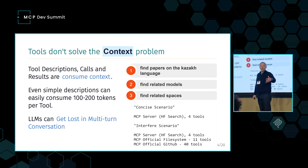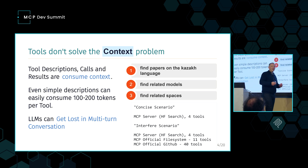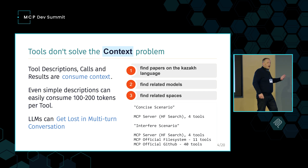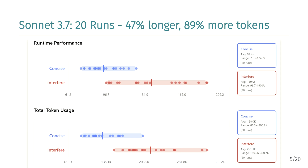One scenario used the search tool I wanted directly; the second added the official filesystem server and the official GitHub server. Running that 20 times with Sonnet 3.7, it took 47% longer on average and consumed nearly twice the number of tokens with those extra tools in context. This is clearly something we need to care about and think about when architecting and designing these types of applications.